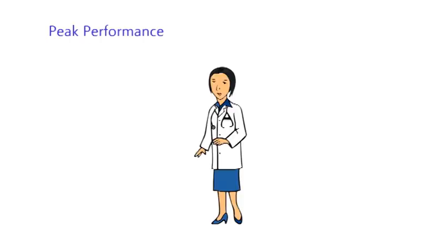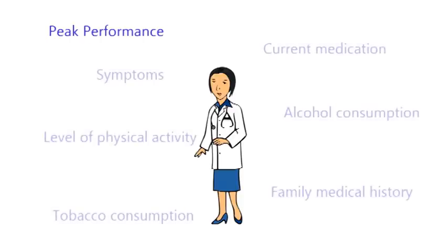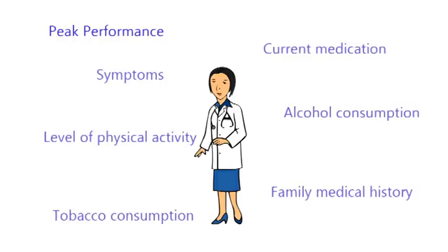This might include any medication that they're on, the levels of alcohol or tobacco consumption which will affect both their cardiovascular and respiratory systems, any symptoms they have - for example, pains in their shoulders might indicate an existing injury - and their level of physical activity so they don't overexert themselves, another way in which you can increase the risk of injury.